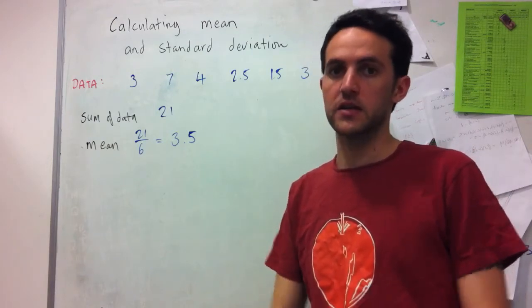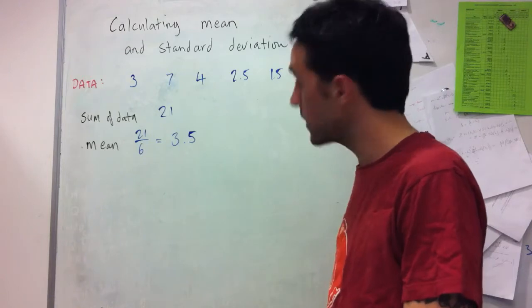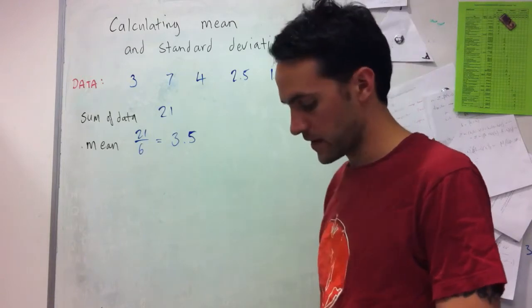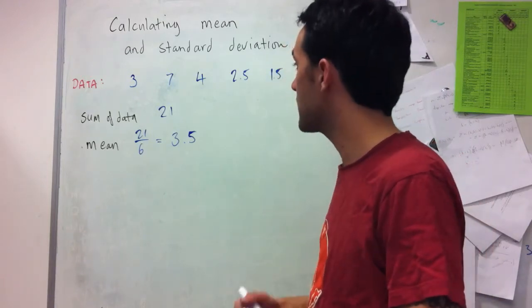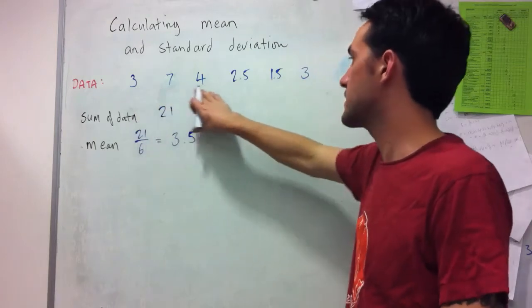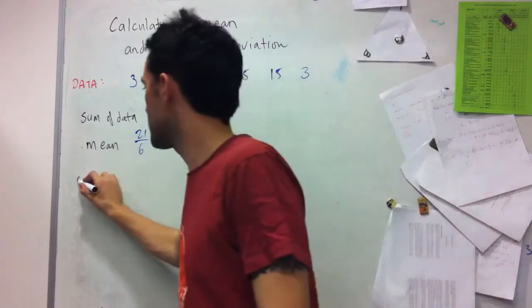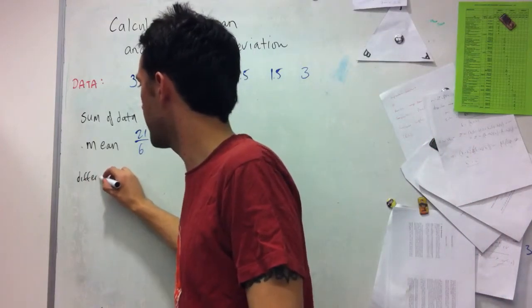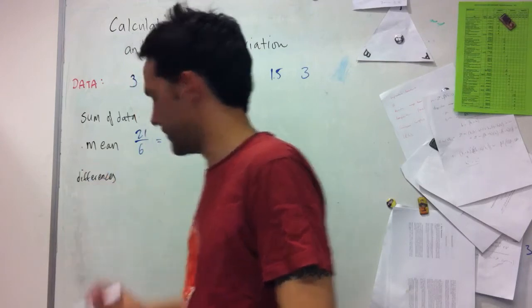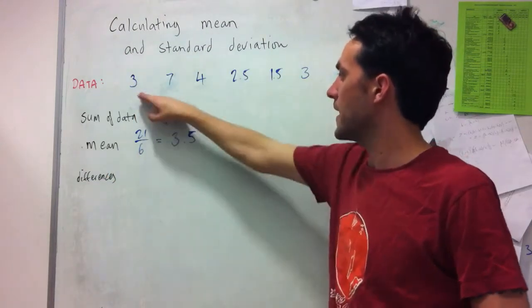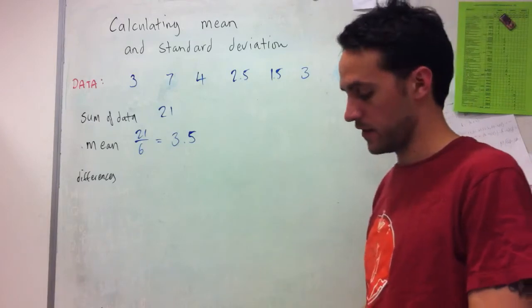So the way that we calculate it is we first take the differences. So the differences between each of the observations and the mean.